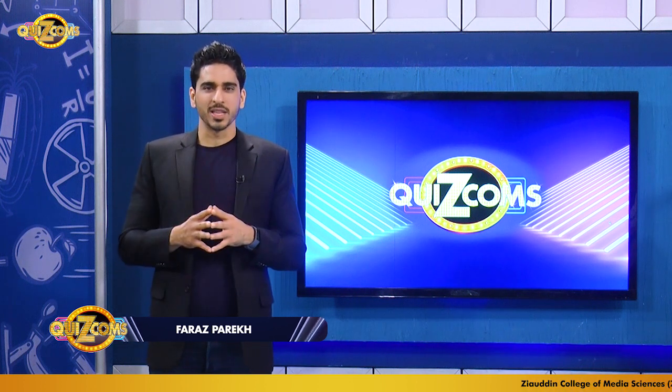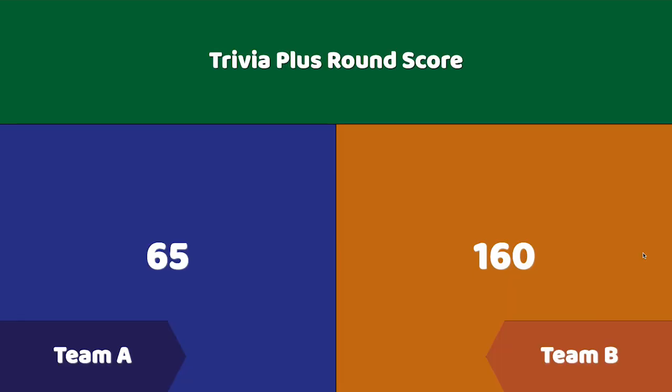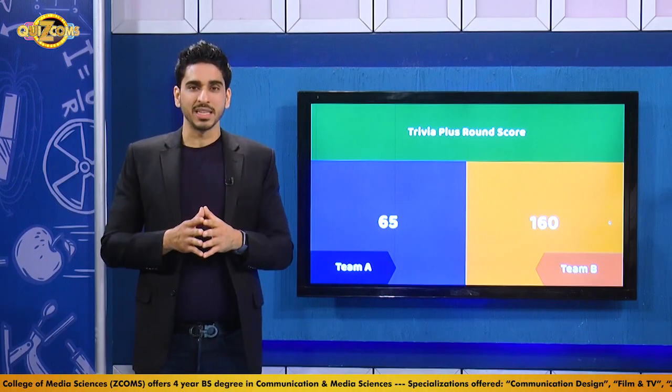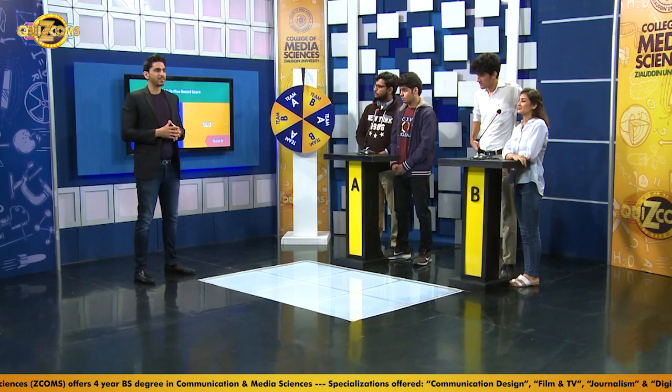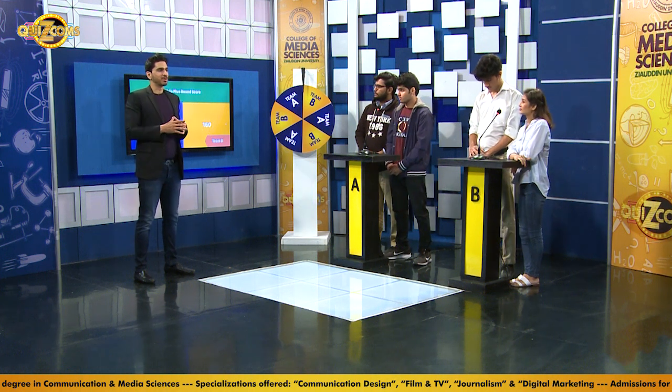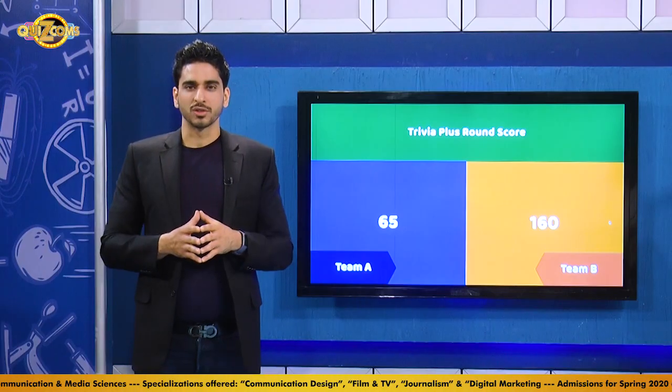Welcome back. After round one Team A was winning and in the driver's seat. After round two, everything has changed. Team A currently has 65 points and Team B has 160 points — a commanding lead. It's no longer a one-question difference. Team A will have to get multiple questions right, or Team B will need to make a major blunder, for the lead to change. Let's see how things go in round three.